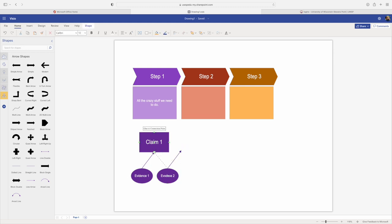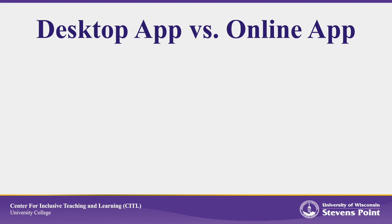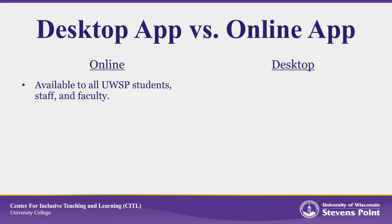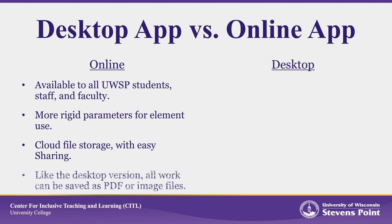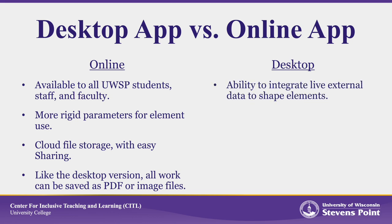It's worth your time to play around with Visio on your own to see what it can do for you. For most users, the online Microsoft 365 app is probably perfectly fine. But I'd be remiss if I didn't mention that there is a more complex desktop app also available from Microsoft. The benefits of the online program are that it's available to all UWSP students, staff, and faculty. Although it's a little bit more rigid with its parameters for element use, it does have cloud file storage and easy sharing. And like the desktop version, everything that you do can be saved as a PDF or an image file for use elsewhere.